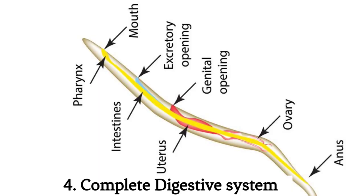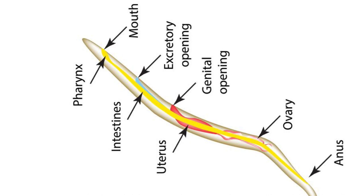4. Complete digestive system. They possess a complete digestive system with a mouth and anus, allowing for efficient food processing and waste elimination.